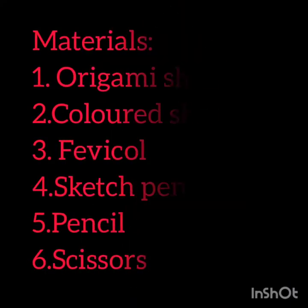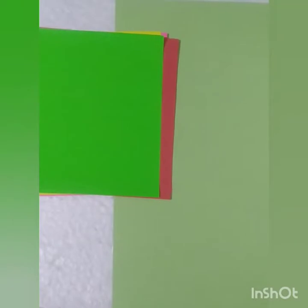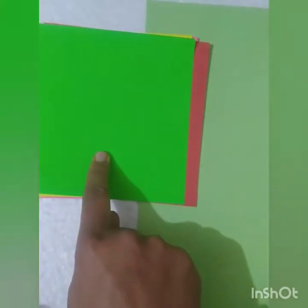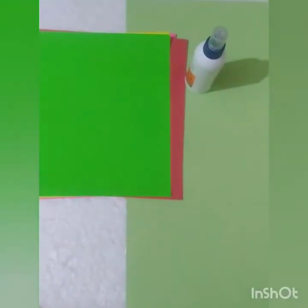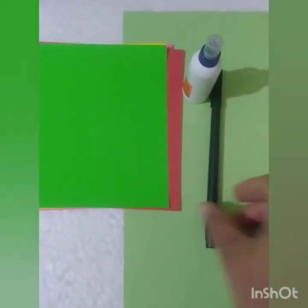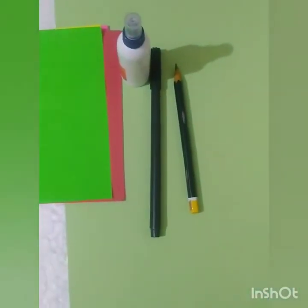So children, for this we need materials like one colored sheet or origami sheets in different colors, Fevicol, sketch pen, pencil, and scissors.